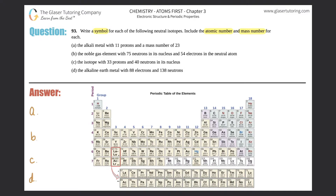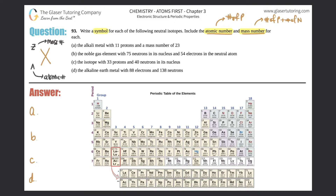So generically, how do we write a symbol for an element? I'll label the element as X — it could be oxygen, nitrogen, whatever the symbol is. The mass number goes on the top and the atomic number goes on the bottom. The atomic number is always the number of protons, and the mass number is everything inside the nucleus — protons plus neutrons.